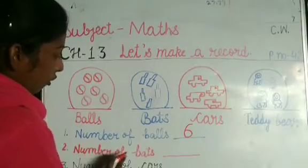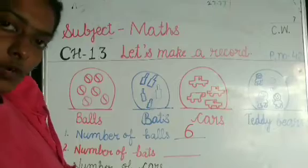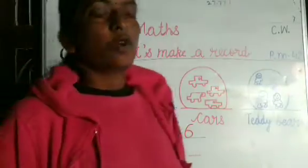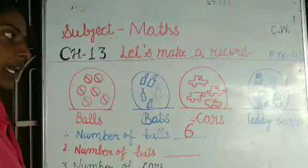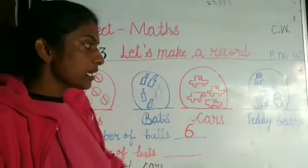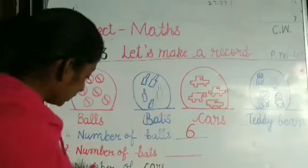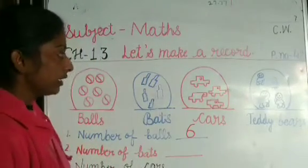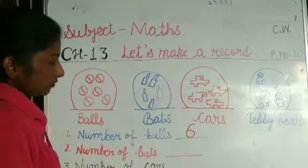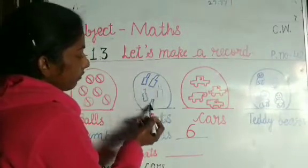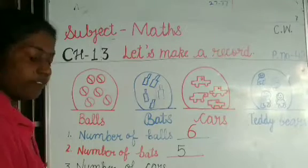Next: number of bats. As you can see, there are balls, bats, cars, and teddy bears — this is the record of toys. To answer number of bats, count the bats: one, two, three, four, five. Total five bats. We write 5 here.